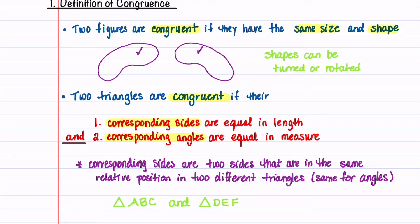Let me clarify what corresponding means. When two triangles have corresponding sides, those two sides are in the same relative position. The same holds true for angles. For example, if we have triangle ABC and triangle DEF, we would say that sides AB are corresponding to sides DE.